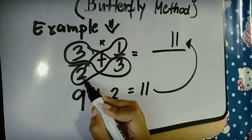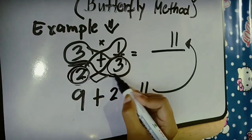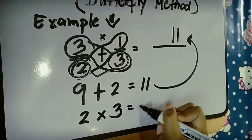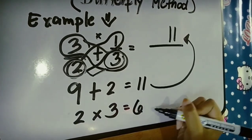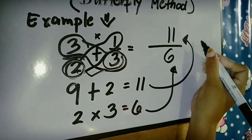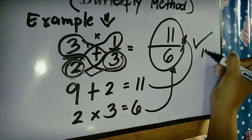For the denominator, we must just multiply the denominators 2 and 3. 2 times 3, the answer is 6. Our denominator now is 6 and it gives the final answer of 11 over 6, same as in the long method.